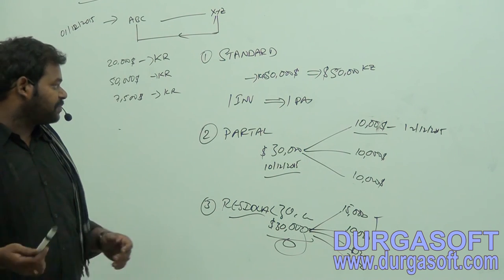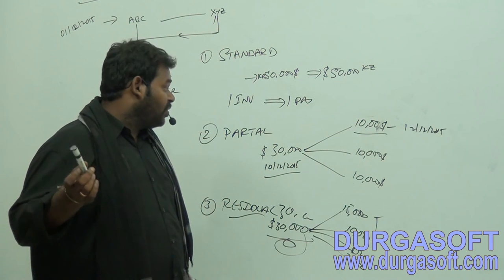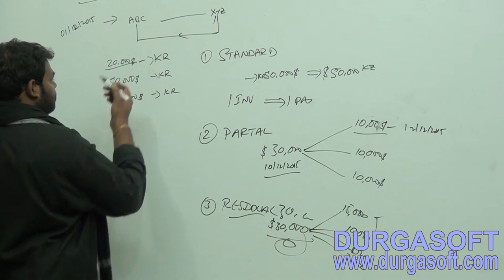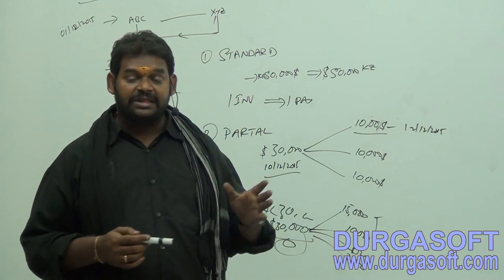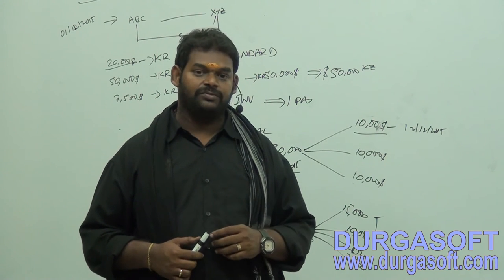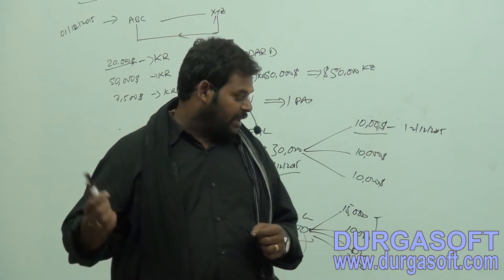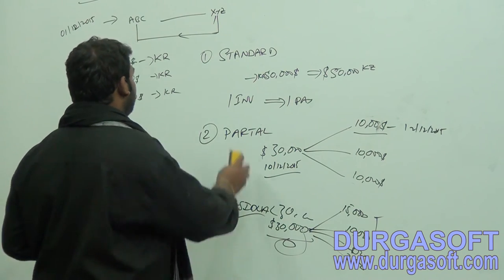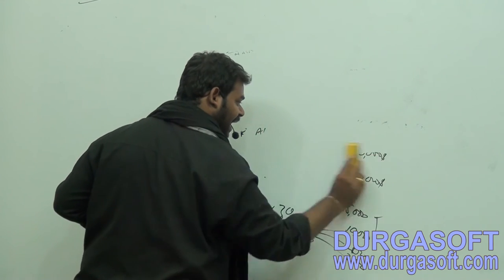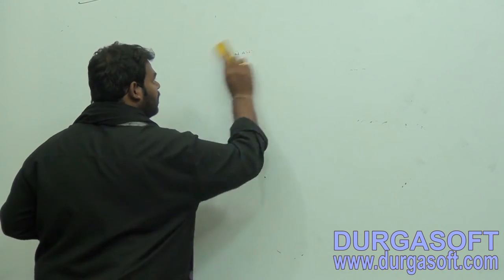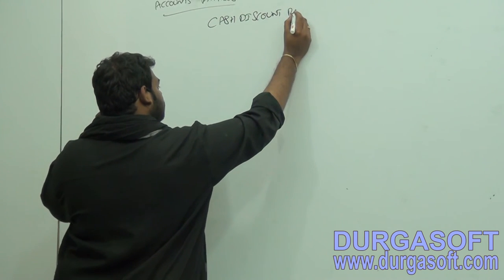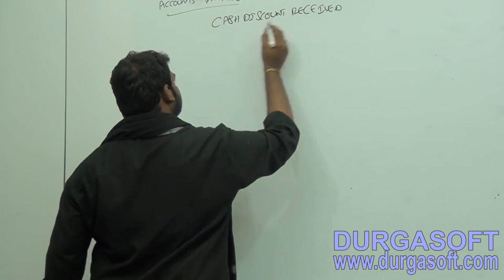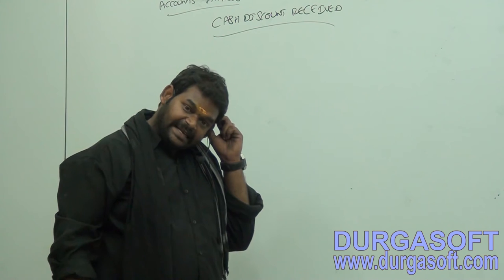Even while doing these procedures — Standard, Partial, Residual — you can ask: when we have made a purchase of $20,000 on a certain date and we are going to pay within the payment terms, how will the system react? Now in Accounts Payables, between payments and invoices, we are going to discuss Cash Discount Received, also called CD Allowed or CD Receive.